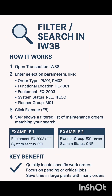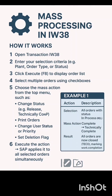For filter search in IW38, open transaction IW38 and enter selection parameters like order type (PM01, PM02), functional location, equipment, system status, and planner group. Then press Execute or F8. SAP shows a filtered list of maintenance orders matching your search. For example, equipment EQ2003 will show only those orders with that equipment type. Similarly, planner group E01 (Electrical System) will show only those maintenance orders assigned to that particular planner group.